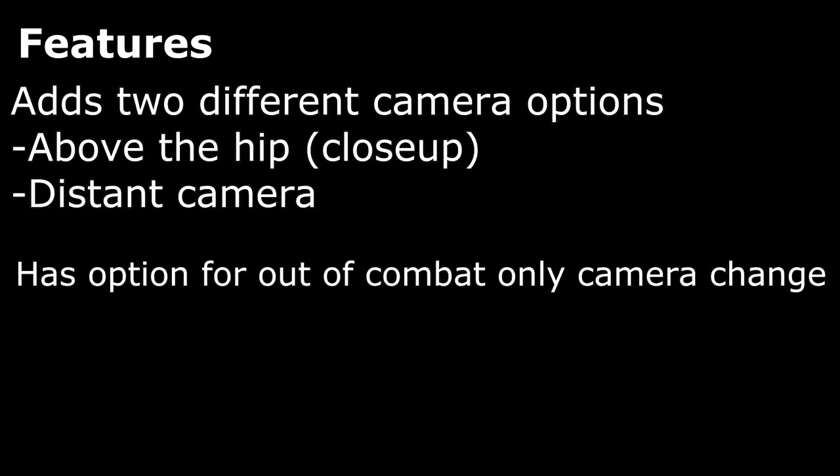This mod gives you the option of two different camera angles: an above-the-hip style camera that shows the top half of your character and leaves the rest of the scene visible, or a distant camera that is a lot more zoomed out, a little bit more reminiscent of some even older than KOTOR 2 RPGs. The mod also has the option to enable the camera change only when you're out of combat, so as soon as you enter combat it'll switch back to the classic camera, which gives you a lot more visibility when fighting enemies.